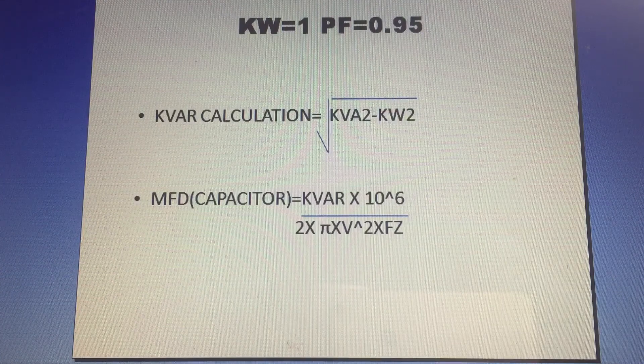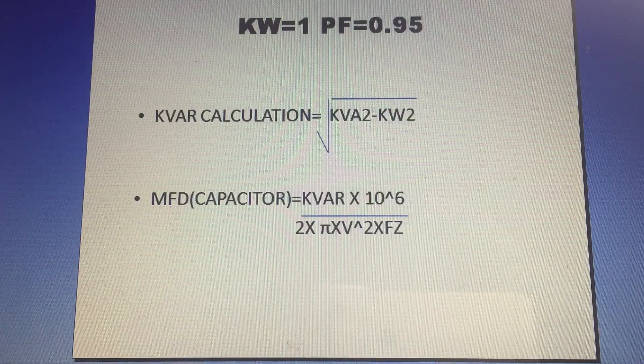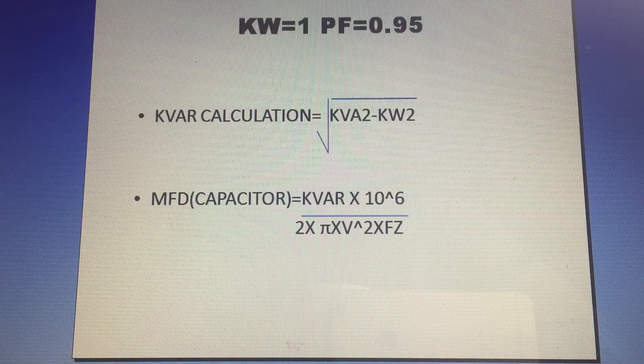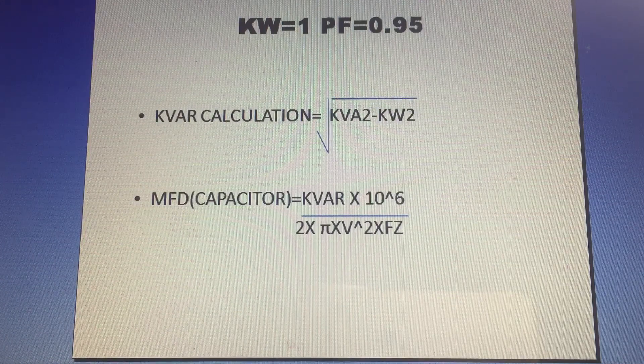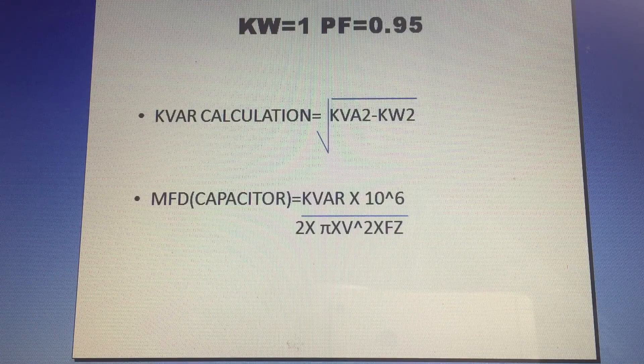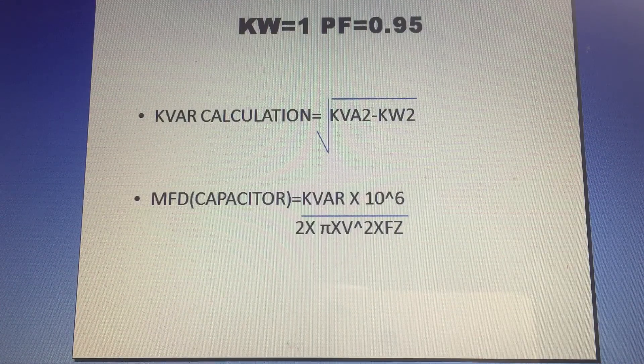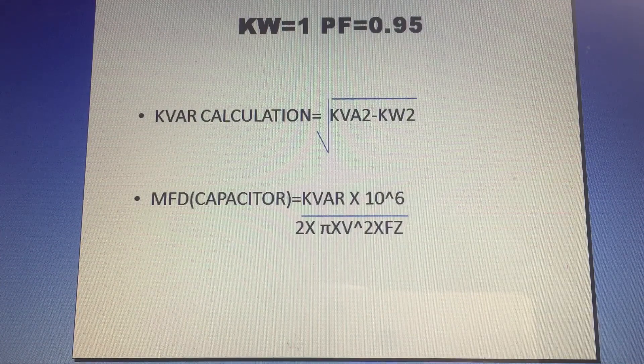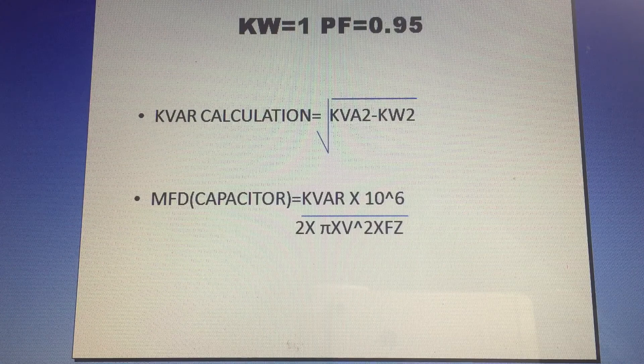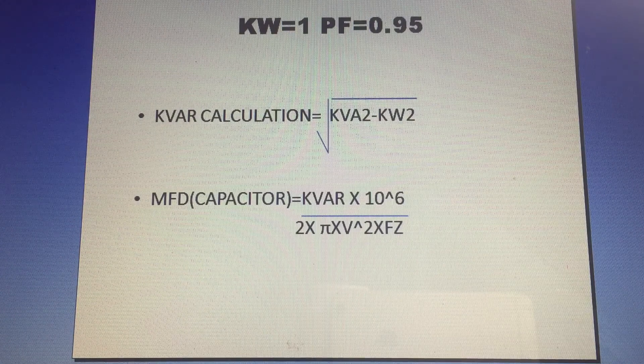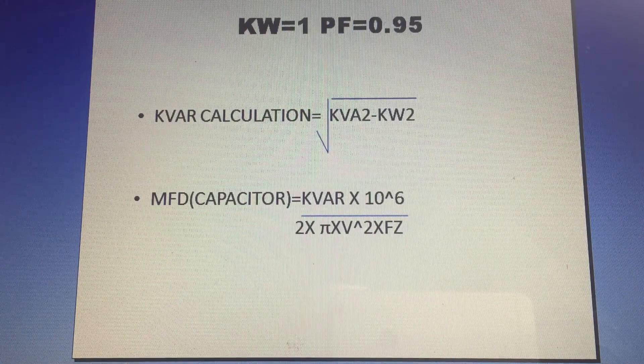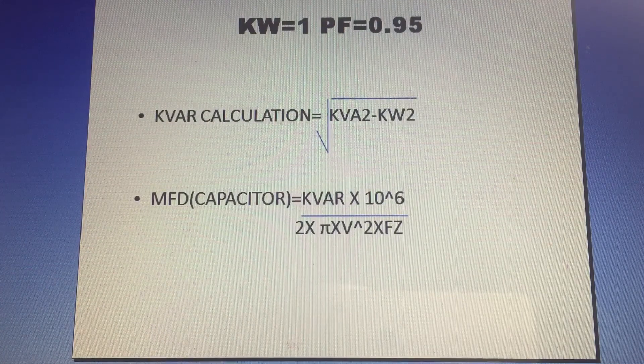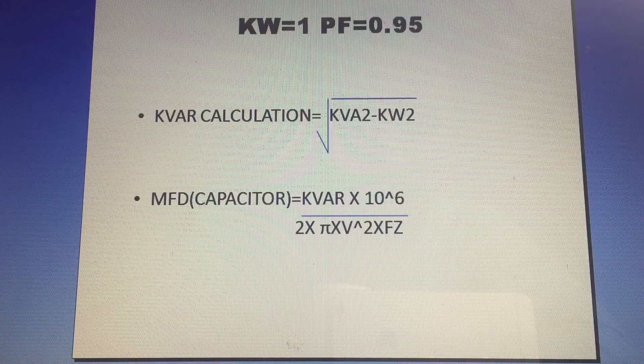The capacitor formula is MFD, that is the unit. MFD of capacitor equals kVAR times 10 to the power of 6, divided by 2 times pi times V squared times frequency. So 2 times pi is constant value 3.14, V is voltage 240 times 240, and frequency is 50 Hertz.